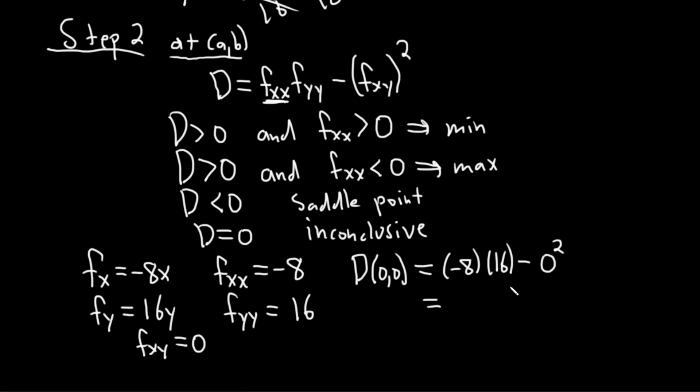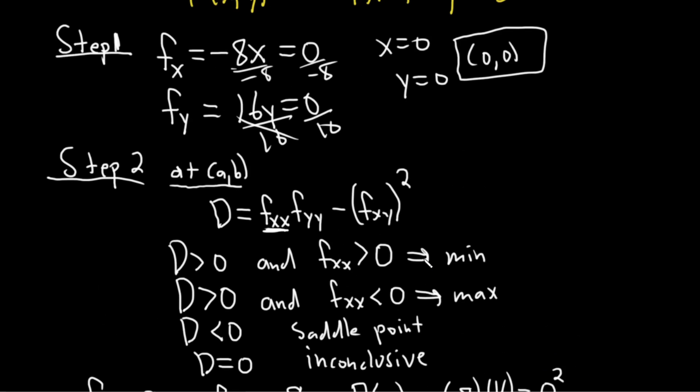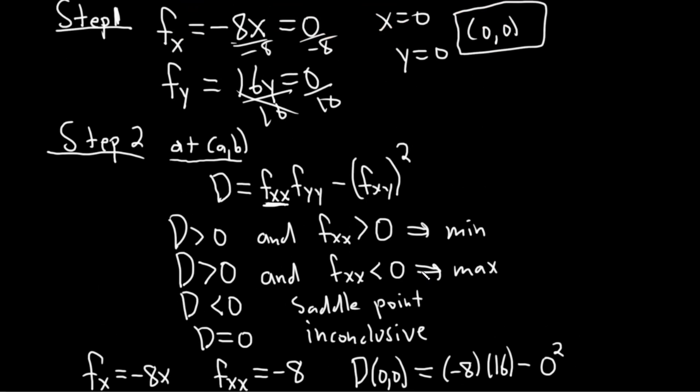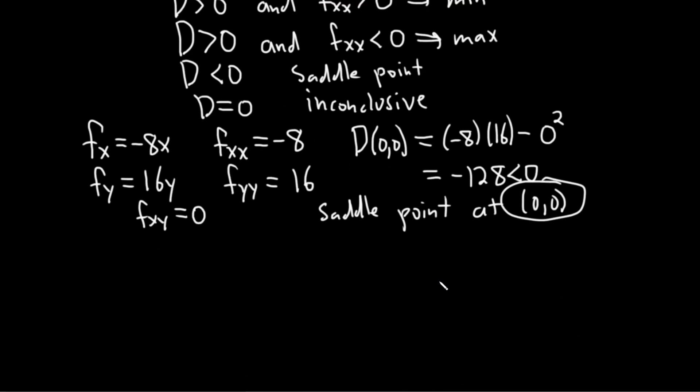Oh look at that. It's less than 0. That means we have a saddle point at 0 0. So saddle point at 0 0. That would be the location of the saddle point. If you actually wanted to find the actual like three dimensional point you would plug it in. So you plug in the saddle point. So let's see.